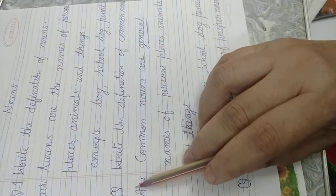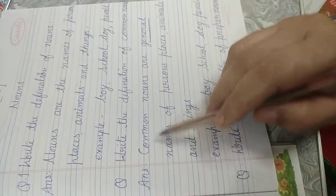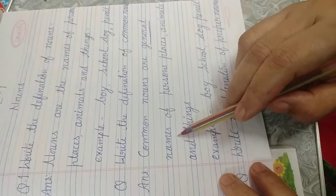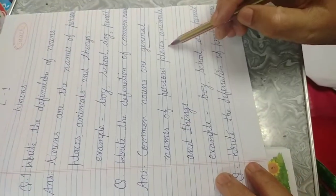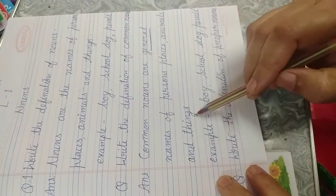Next, write the definition of common noun. Common nouns are general names of persons, places, animals, and things.